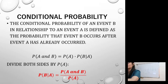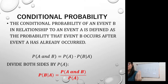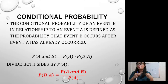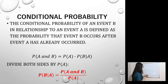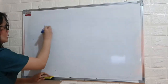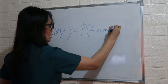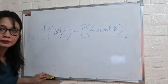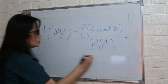When we say conditional probability, there is a condition. Dividing both sides by the probability of A, therefore the probability of B given A is equal to the probability of A and B over the probability of A. So for conditional probability, you need to familiarize yourself with that symbol. The probability of B given A equals the probability of A and B over the probability of A.